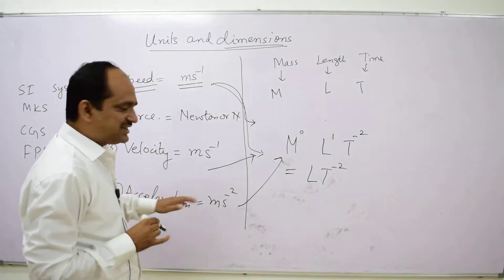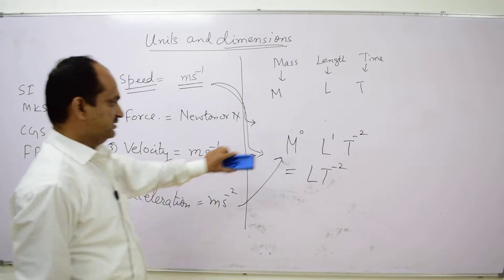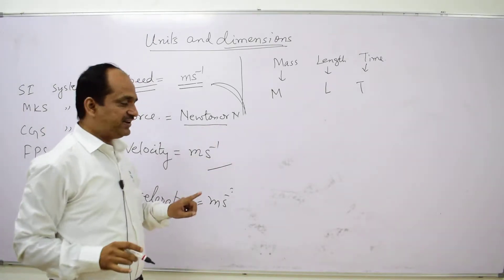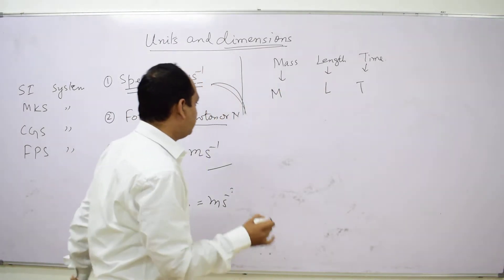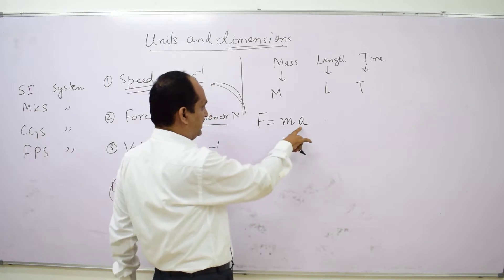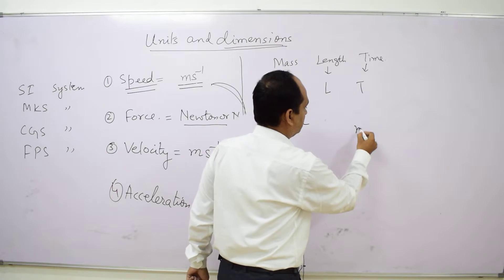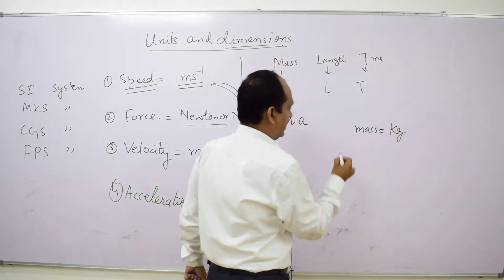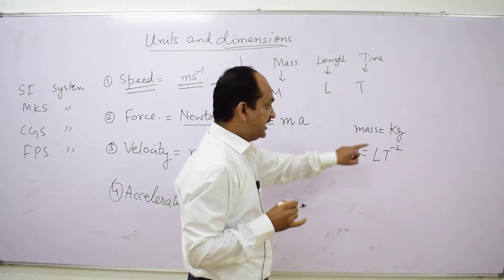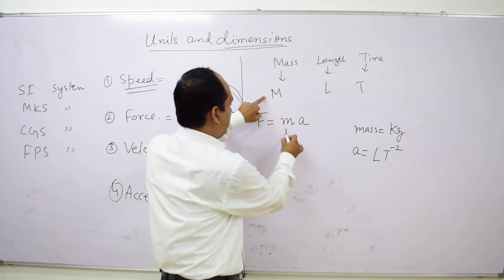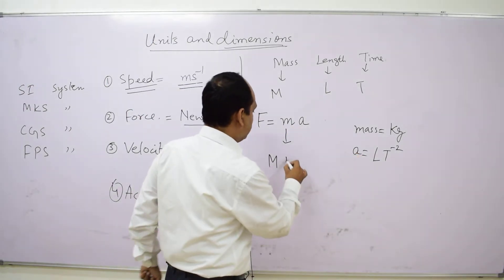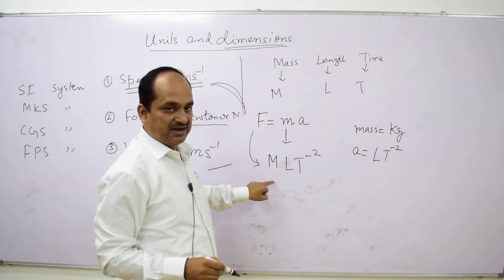For force, the unit is Newton. We cannot directly relate Newton to mass, length, and time, so we use the formula F = MA, where M is mass and A is acceleration. Mass gives dimension M, and acceleration gives L T minus 2. So the dimension of force is M L T minus 2.